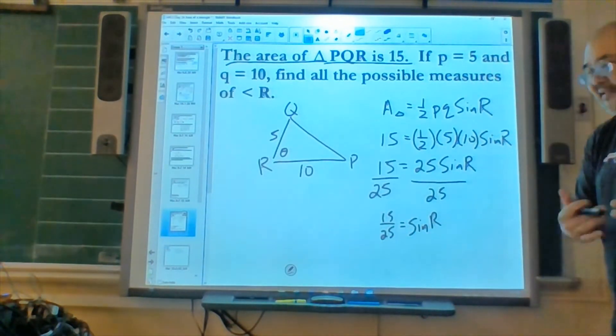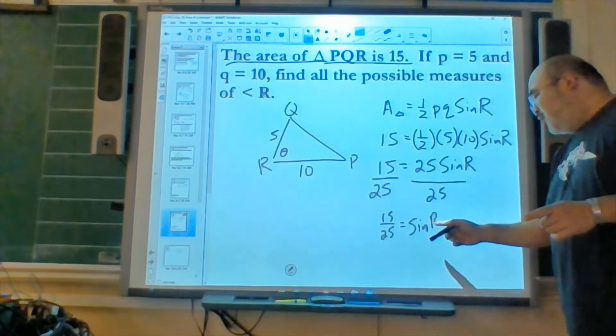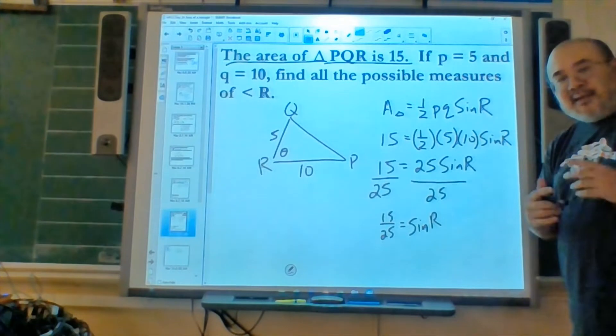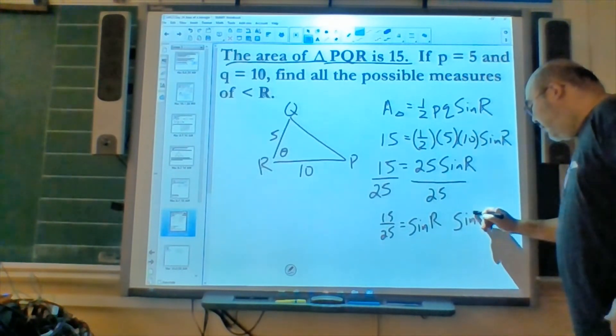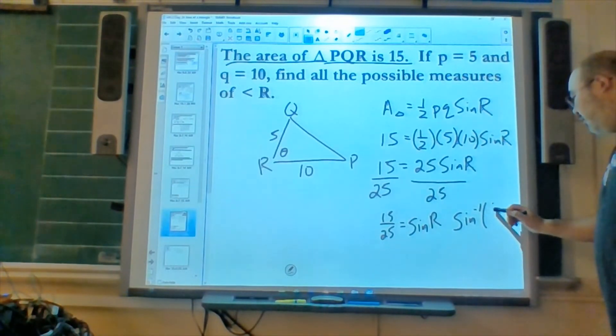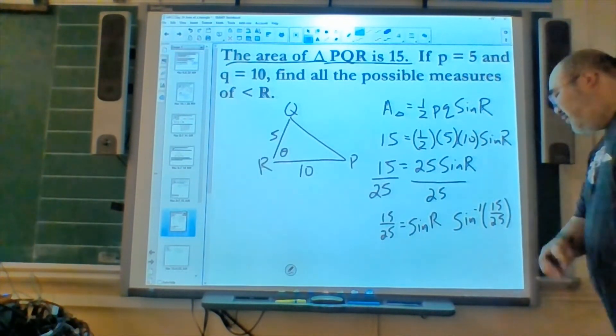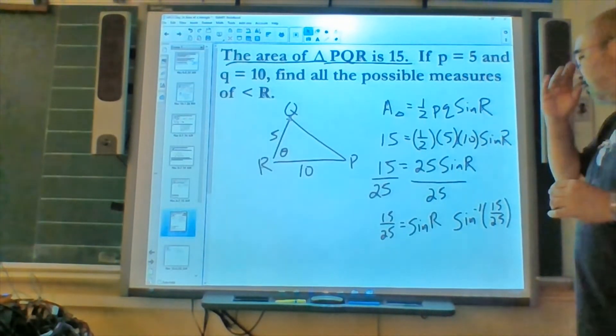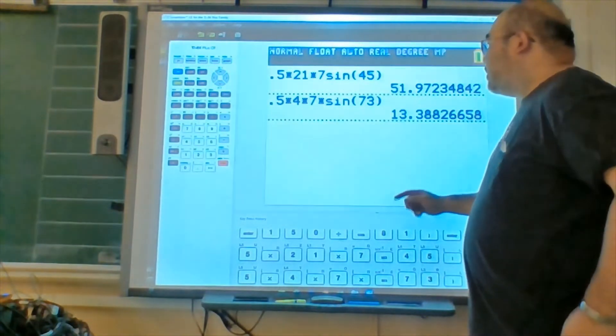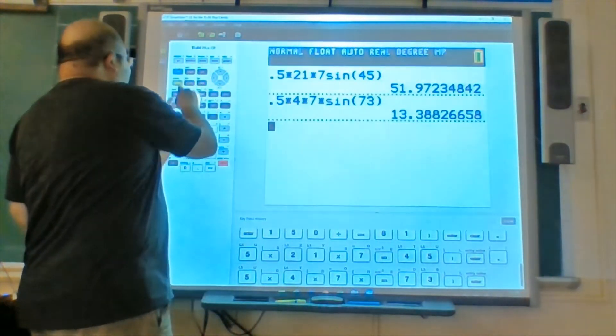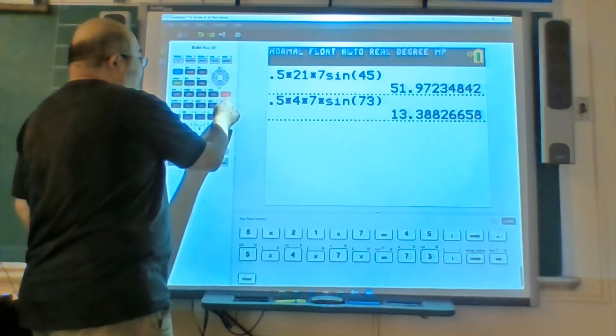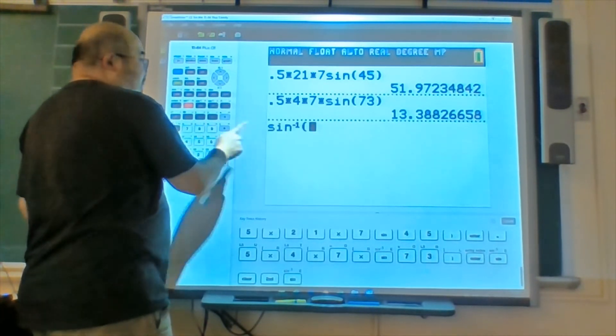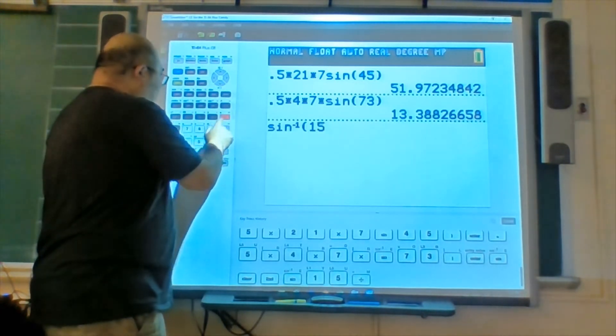Leaving us with the sine of R is equal to 15 over 25. Now, you can simplify to three fifths, but remember, we're trying to find an angle measure, and the procedure to find an angle measure is not sine, but sine inverse. Here, it would be sine inverse of 15 over 25. Now, let's go to the calculator. We want to get sine inverse, so second sine, of 15 over 25, 15 divided by 25.